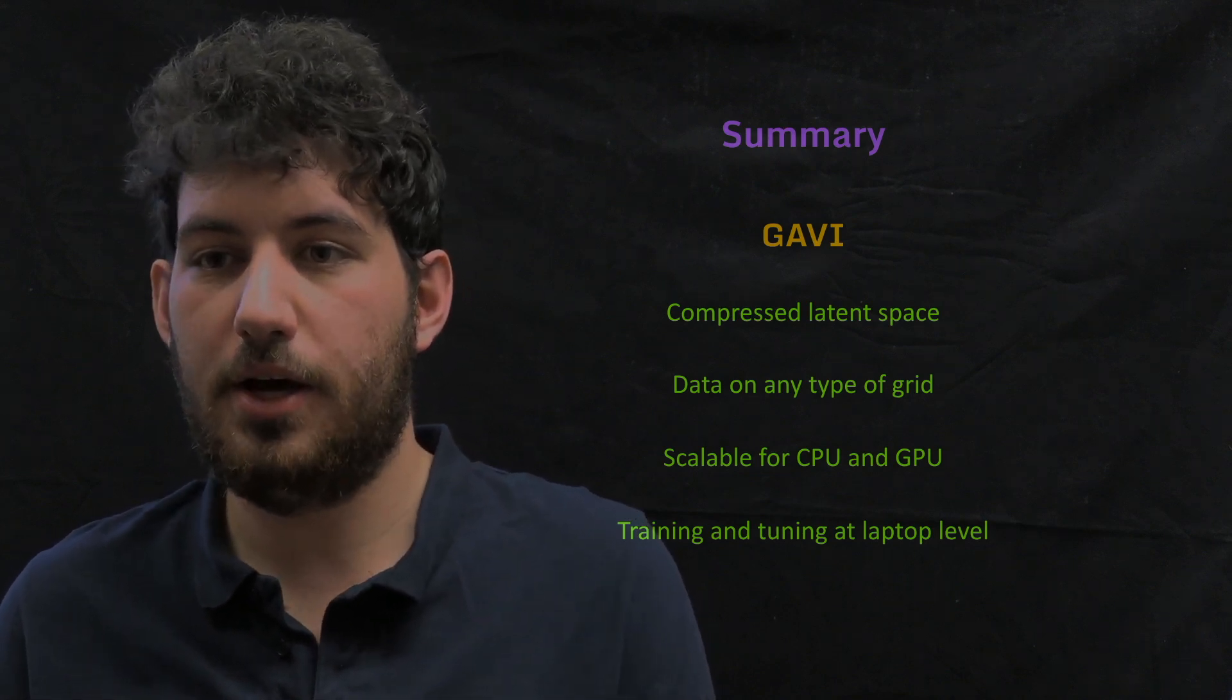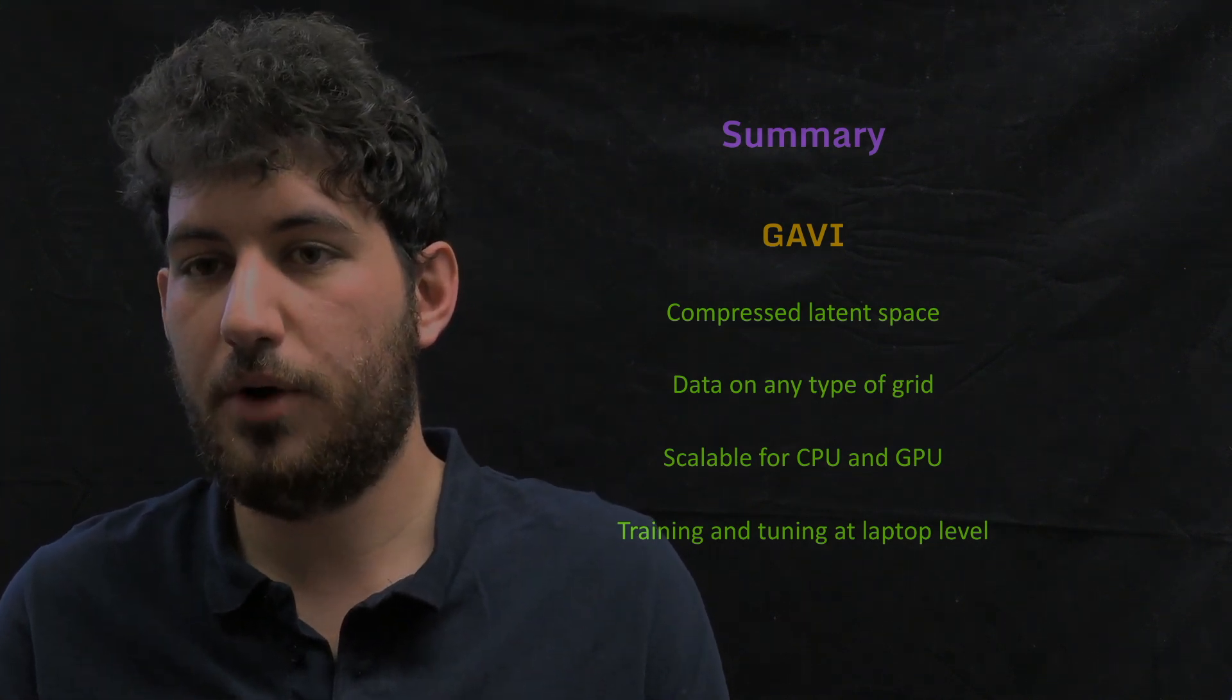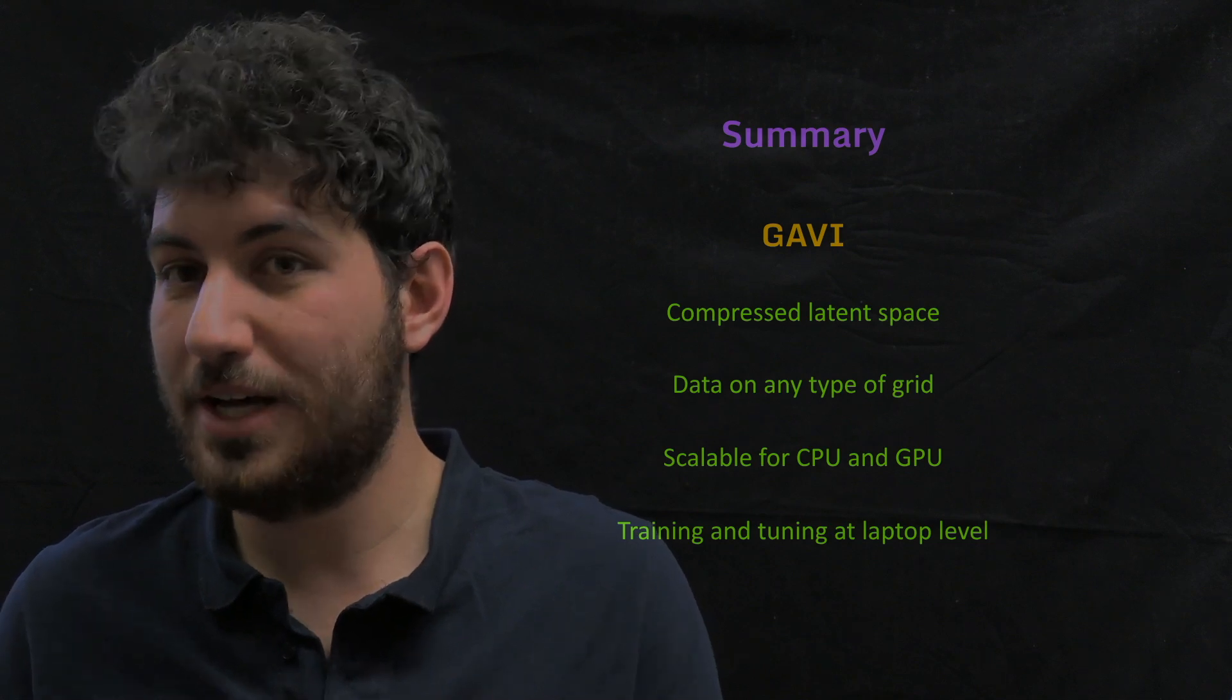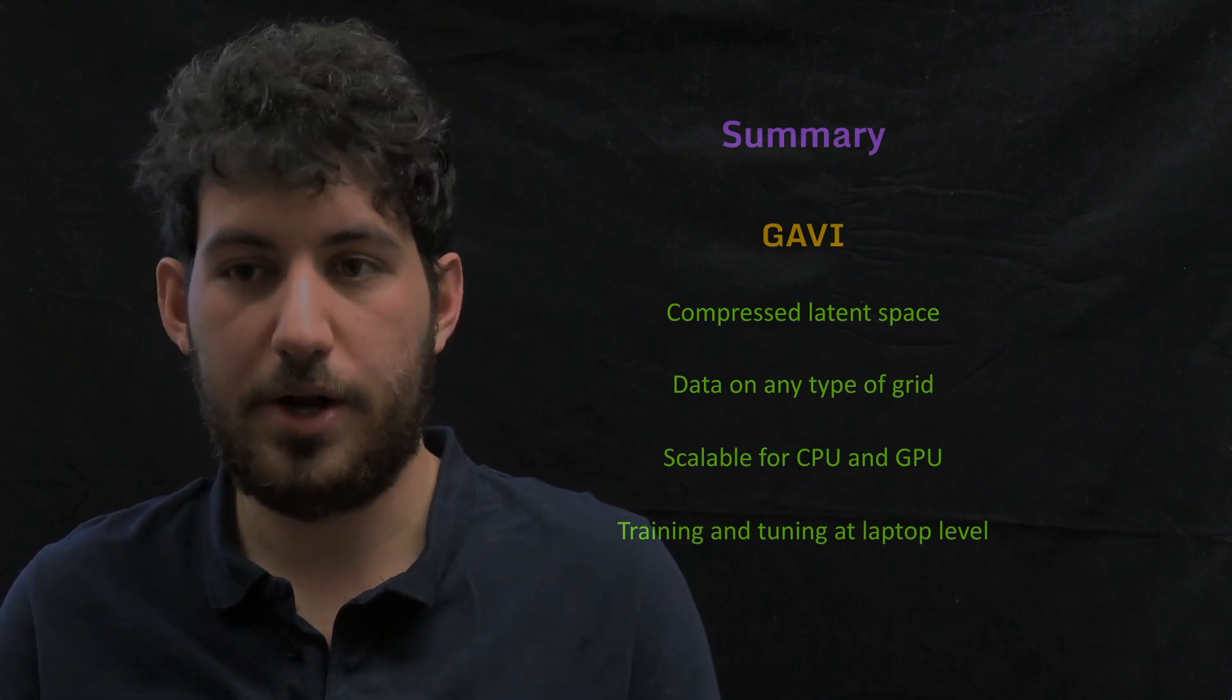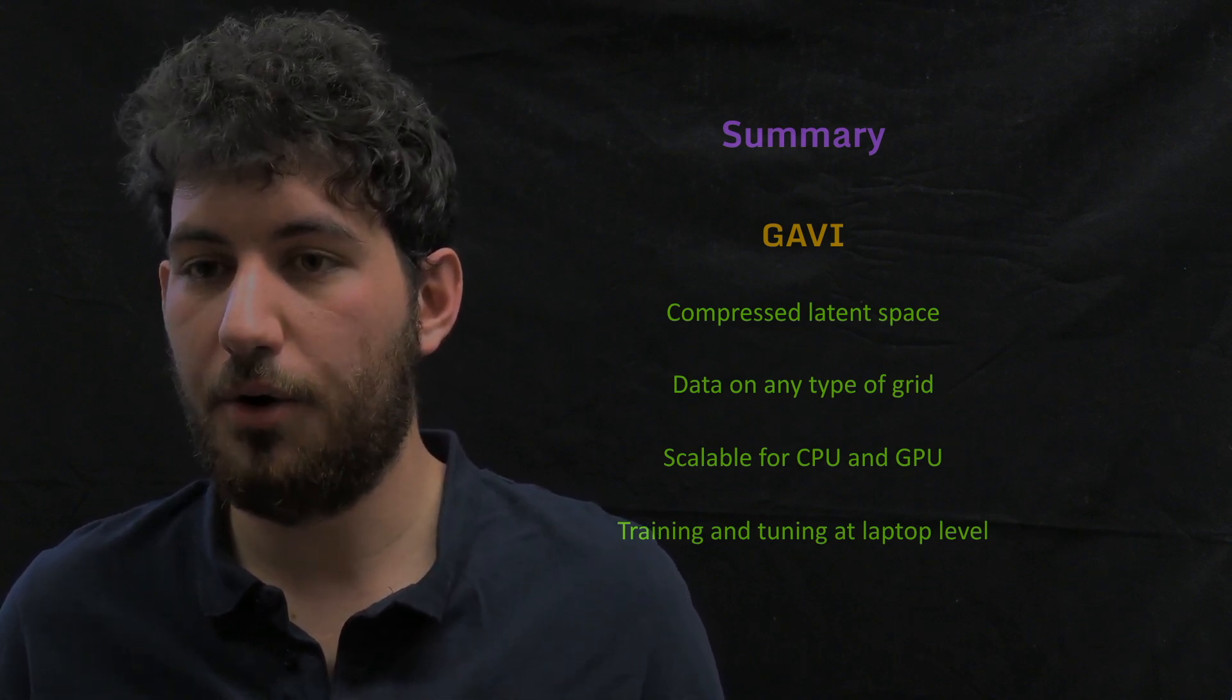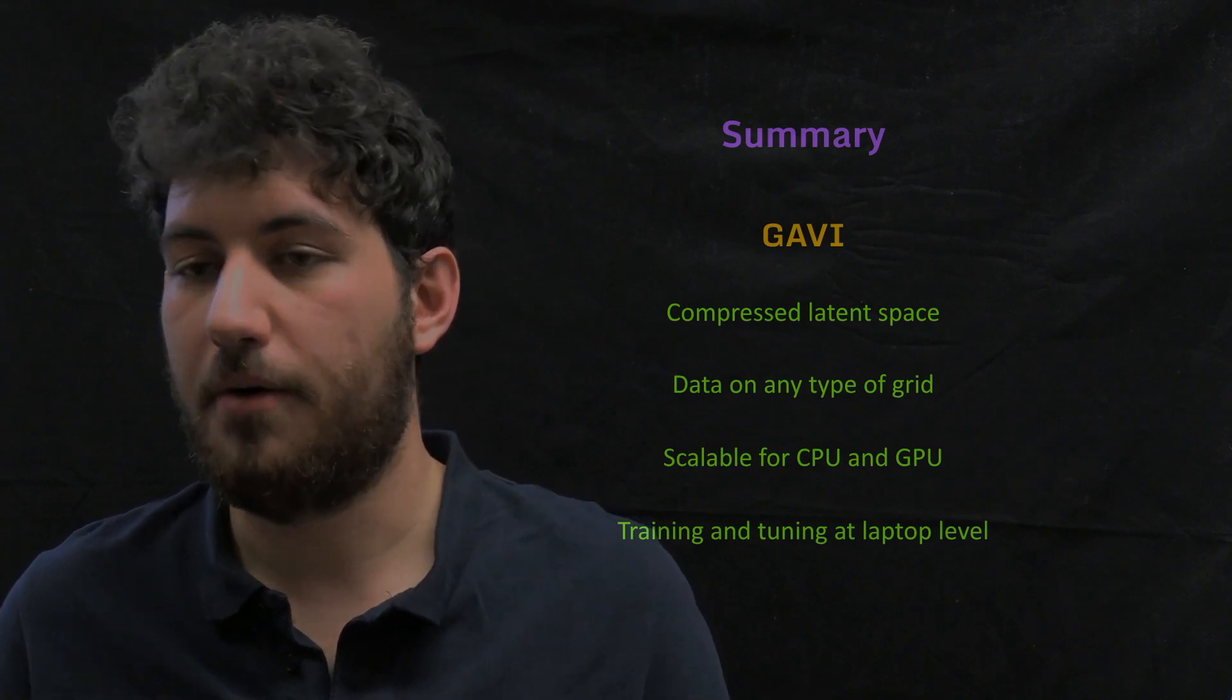It has scalability for CPU and GPU, especially the first part of GAVI, which is this randomized QR factorization. We can scale for CPU and GPU, making it scalable to any data size, but also cheap because the time that we need for the QR computation is quite small, even though we need kind of a lot of resources to start going. And at the end, the autoencoder training and tuning can be done at laptop level in something around half an hour.